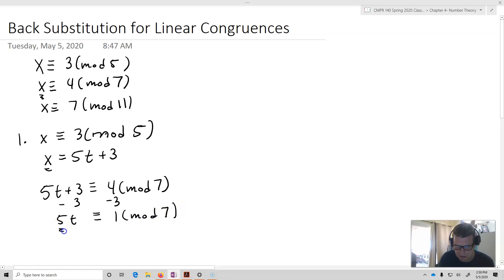And then what I'm going to need is I'm going to need the inverse of 5 modulo 7. So the inverse of 5 modulo 7 is 3. So we'll multiply both sides by 3. This will give me 3 times 5t is going to be equivalent to 3 times 1 modulo 7. And so consequently, this means because we found the inverse, that's going to give me back t, or just 1t, and that'll be equivalent to 3 modulo 7.